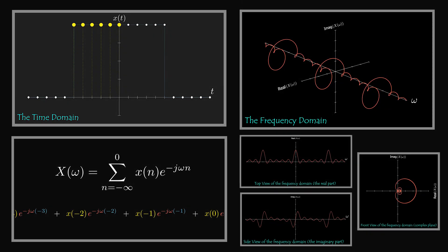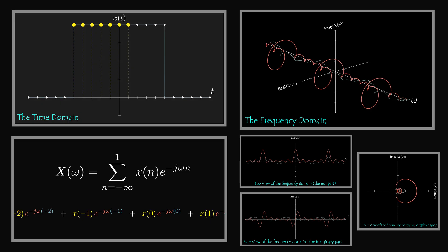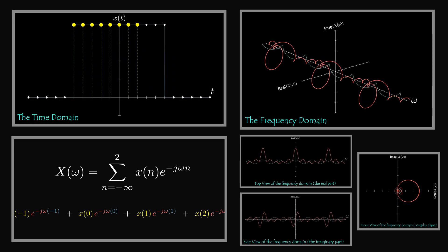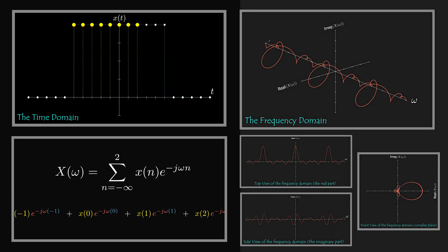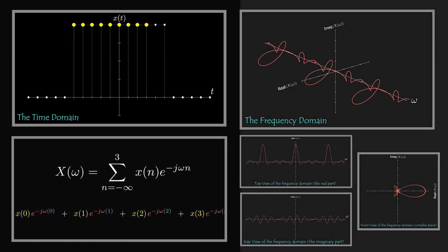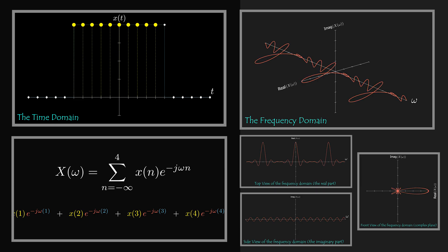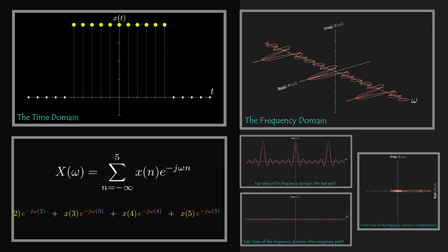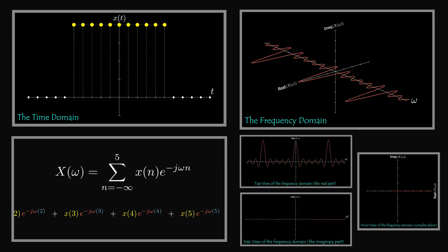The signal is discrete only in the time domain; the frequency domain is continuous. Each sample corresponds to a complex exponential in the frequency domain, and hence the frequency domain representation, which is the sum of all of them, is continuous. So time domain is discrete and frequency domain is continuous — that's why we call it discrete time Fourier transform. Unlike the discrete Fourier transform, in which the signal is discrete in both time and frequency, we will discuss discrete Fourier transform in the next video.